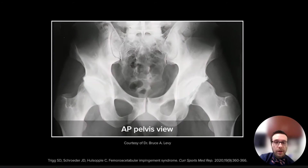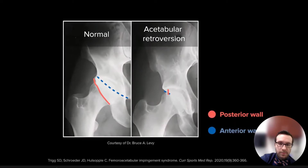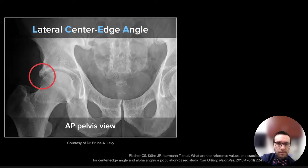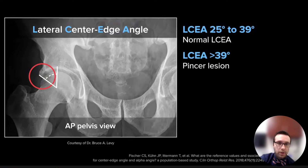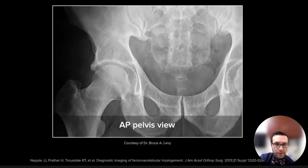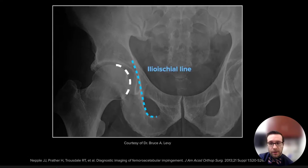For pincer deformities, we can look at an AP view for signs of focal and global over-coverage. Retroversion can be identified with a crossover sign, where the posterior and anterior walls intersect. The lateral center edge angle can also be used — it is the angle between the vertical axis and the line between the rim and the center of the head. The normal angle is between 25 and 39 degrees; anything beyond 39 degrees is considered a pincer deformity. Coxa profunda and protrusio acetabuli can be assessed by looking at the ilioischial line: if the cup passes the line, it is coxa profunda; if the head of the femur passes this line, it is protrusio acetabuli.